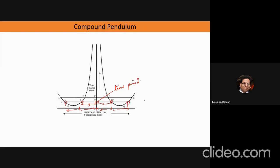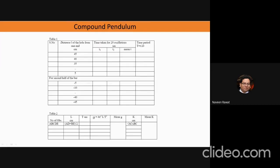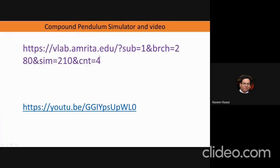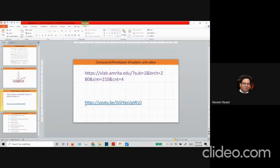The effective length L is calculated as (AD + B)/2 from the graph, and that's how you get your value of g. The link for the simulator is provided in the presentation, along with a detailed video available online to help you perform this experiment.